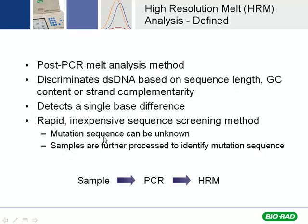The mutation sequence can be known or unknown. If the mutation is known, it's a great way to screen between populations for that known mutation. If the mutation in the sequence is not known, you can at least know the mutation is there with HRM, and then you would have to process the samples further to identify the mutation sequence.